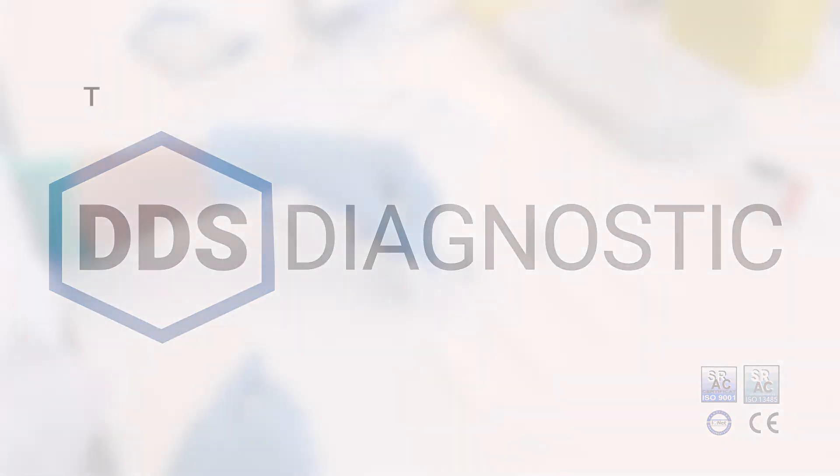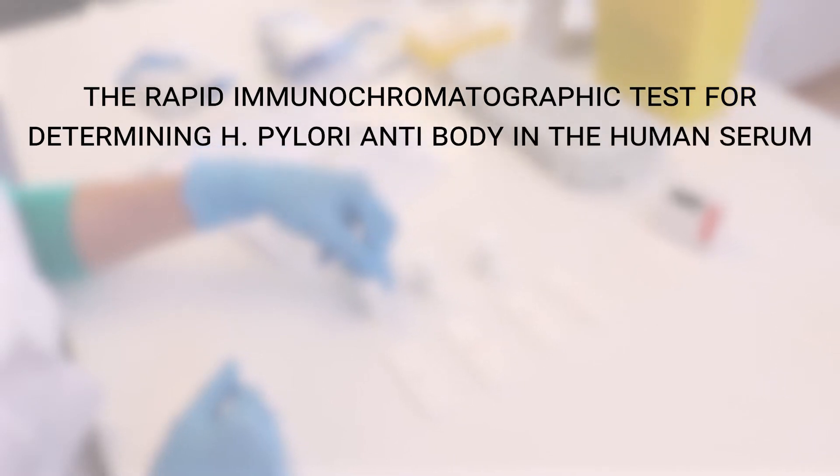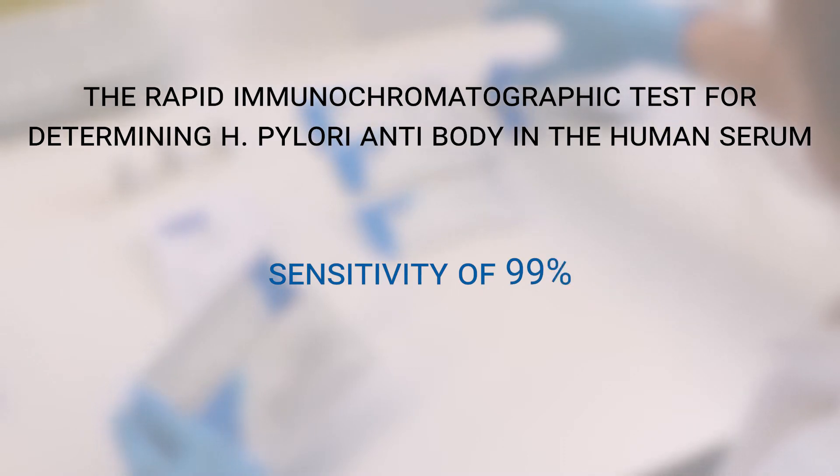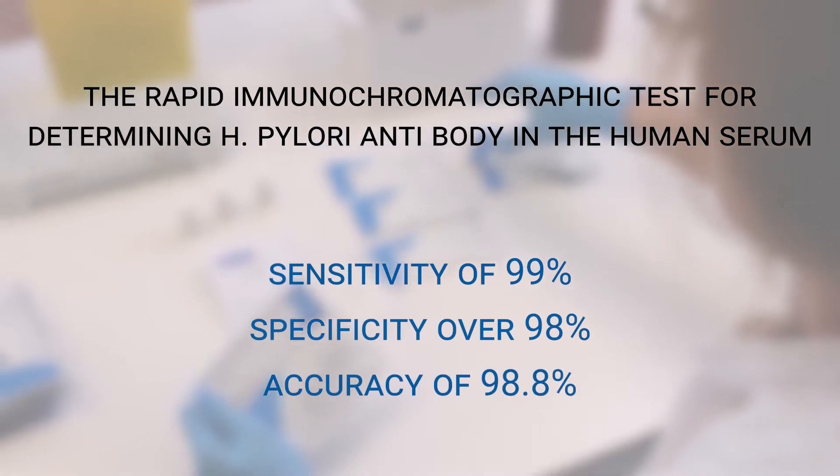DDS Diagnosis presents the rapid immunochromatographic test for determining H. pylori antibody in the human serum. This test has a sensitivity of 99% and a specificity over 98% with an accuracy of 98.8%.